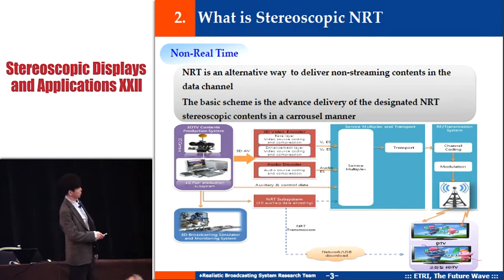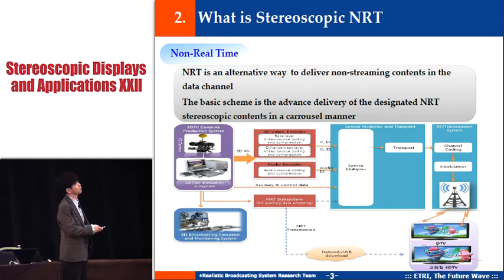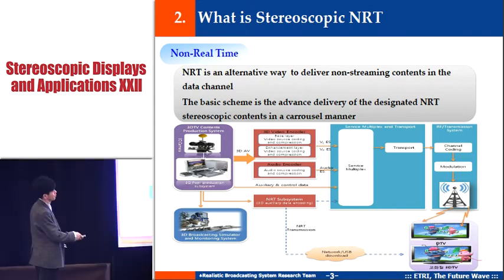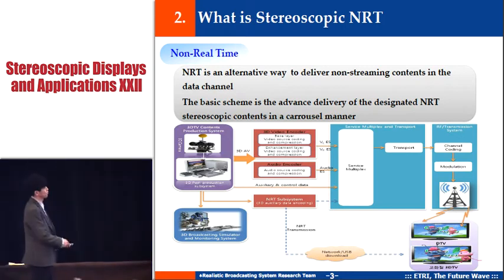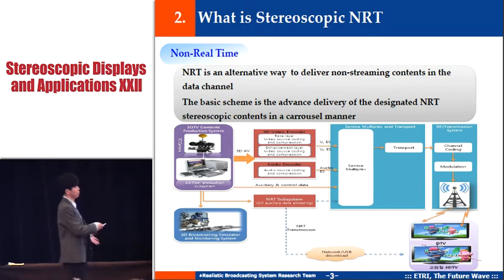Here is the concept of stereoscopic NLT. NLT is an alternative way to deliver non-streaming content — like a file or directory object in the data channel. The basic concept is the advanced delivery of designated NLT stereoscopic content. This concept diagram shows that one path is NLT while another is real-time 3D video; that path could be broadcast, a telco network, or even a USB from the user. The receiver provides enough storage for NLT content, along with a synchronized mechanism.